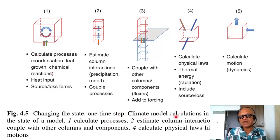Changing state, one step. Climate model calculations in a time step that change the state of a model. Calculate processes, estimate column interactions like precipitation, evaporation, or heat exchange, humidity changes. Couple with other columns and components, and calculate physical laws like radiation. You have to do the balance of energy, mass, heat, and radiation. And calculate motions or dynamics.